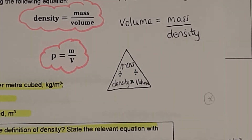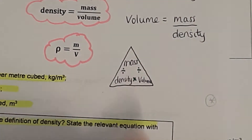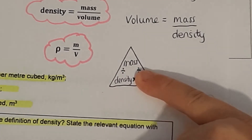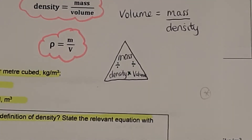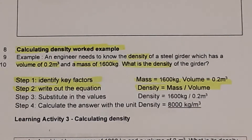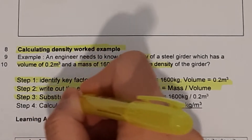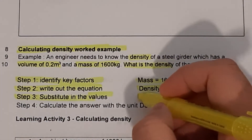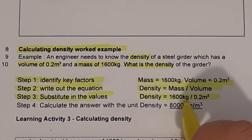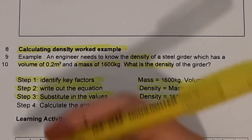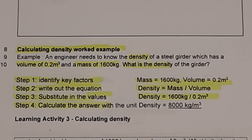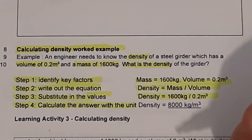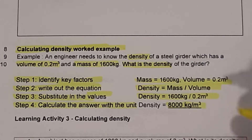Using the equation triangle: cover density and you get mass divided by volume; cover volume and you get mass divided by density; cover mass and you get density times volume. Step three: substitute in the values — density equals 1,600 divided by 0.2 metres cubed. Step four: use a calculator. The answer is 8,000, and our unit is kilograms per metre cubed. In an exam you get a mark for the answer, a mark for the units, and sometimes a mark for rearranging the equation. You may also need to convert units.